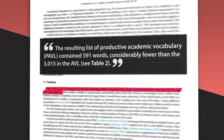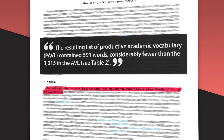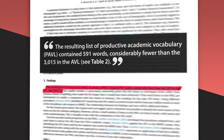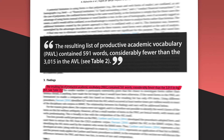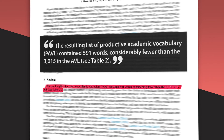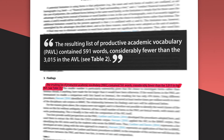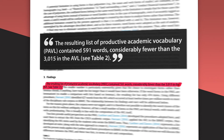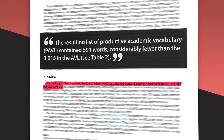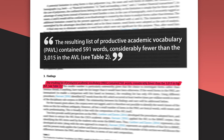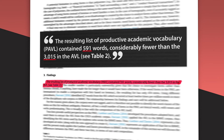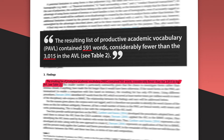In the results section, we find out what the researchers learned. 'The resulting list of productive academic vocabulary, or PAVL, contained 591 words — considerably fewer than the 3,015 in the AVL.' Remember that the study compared students' productive and receptive vocabularies? The productive vocabulary was much smaller.